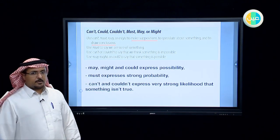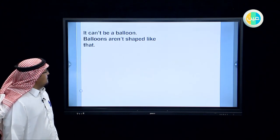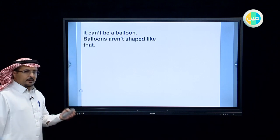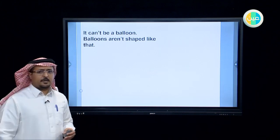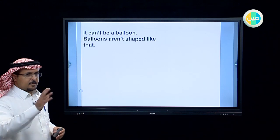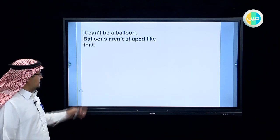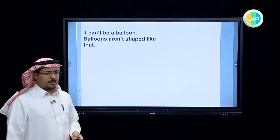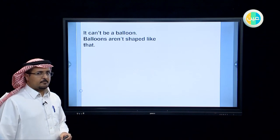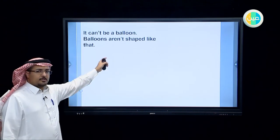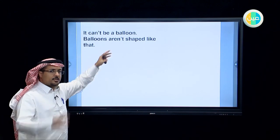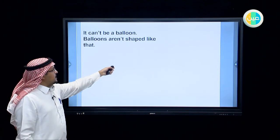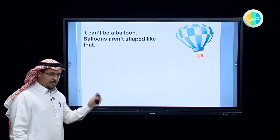Can't and couldn't express a very strong likelihood that something isn't true. Let's see this example: imagine a guy looking at something in the sky. He doesn't know what it is. He says it can't be a balloon because he draws this conclusion from the shape of the object he saw — balloons aren't shaped like that.